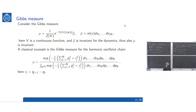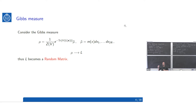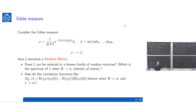This Gibbs ensemble induces a probability distribution on the entries of the Lax matrices, so L becomes a random matrix. Now there are two kinds of questions that arise naturally: one more on the mathematical side and one more on the physical side. On the mathematical side, one can wonder if L can be reduced to some known random matrix ensemble, allowing one to study the spectrum as n goes to infinity, characterize the spectrum, study fluctuations, and study correlation functions between eigenvalues.